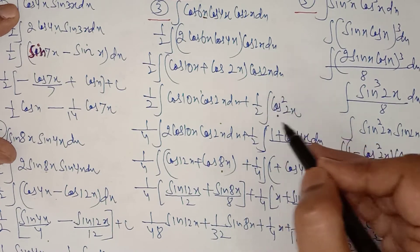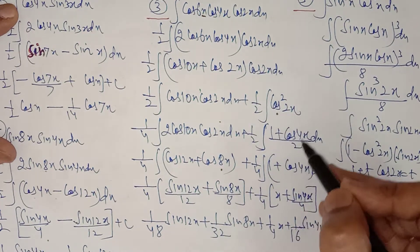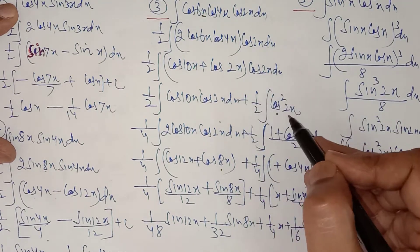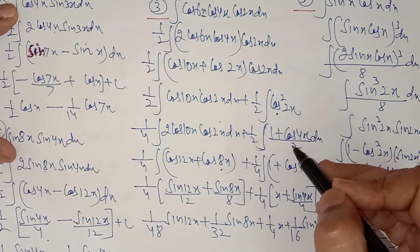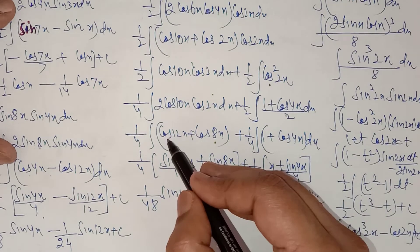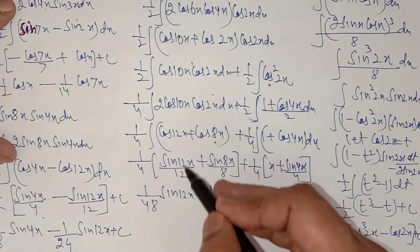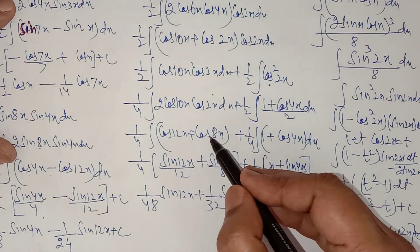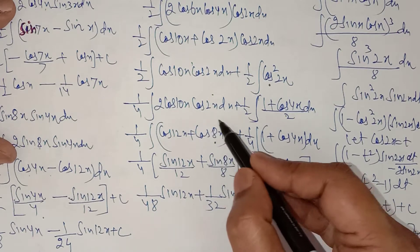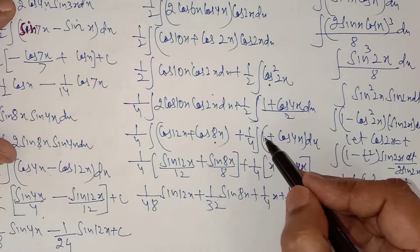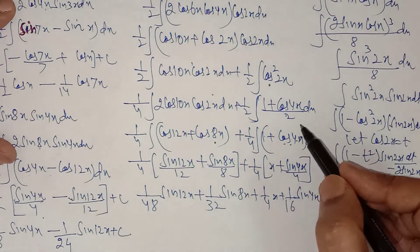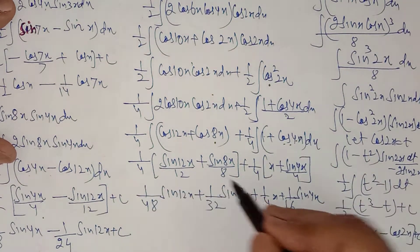The remaining term is cos²2x. You know the formula cos²2x = (1 + cos 4x)/2. Multiply and convert into single terms. The integral of cos 12x is sin 12x/12; the integral of cos 8x is sin 8x/8; the integral of 1 is x; and the integral of cos 4x is sin 4x/4. Multiply and open the bracket to get the final answer.